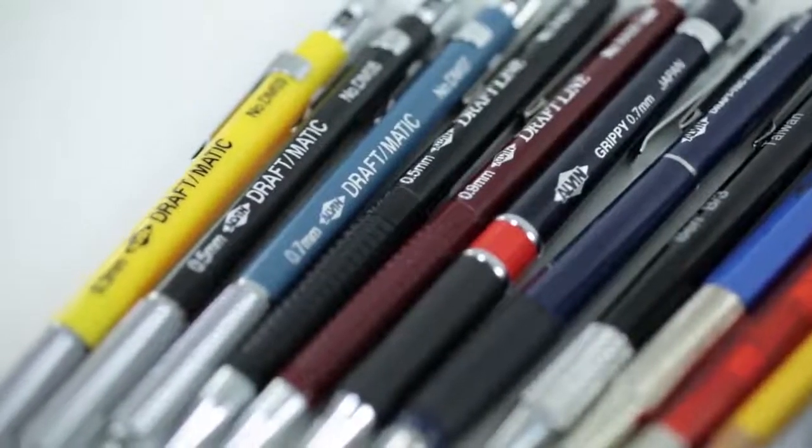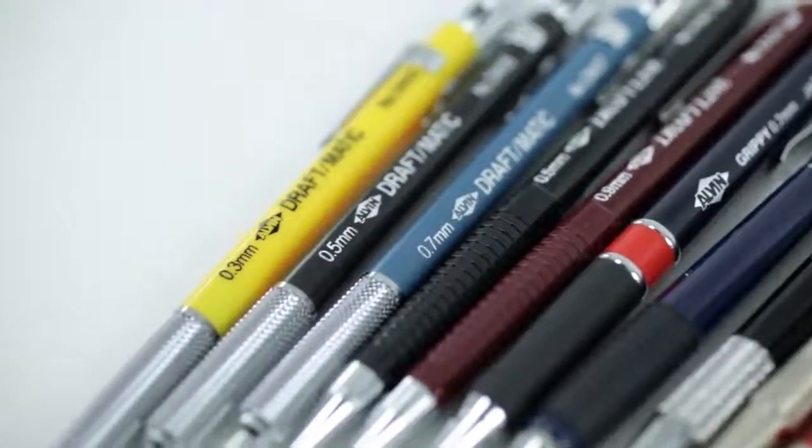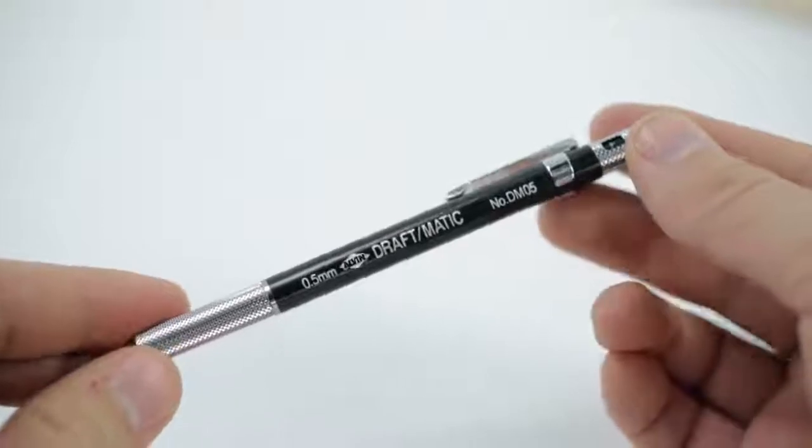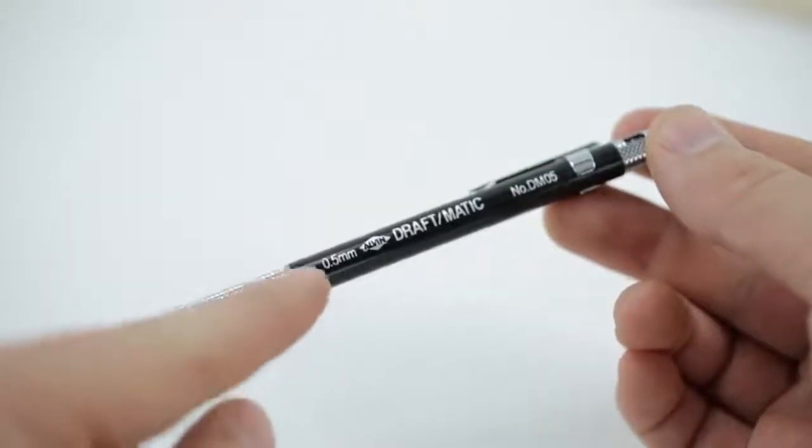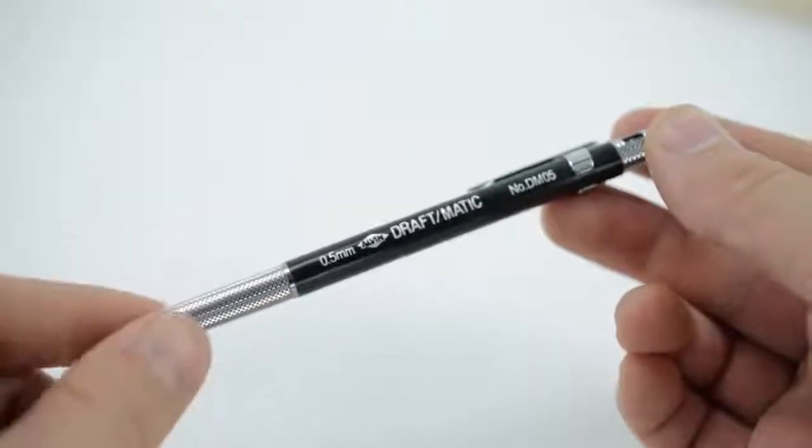Basically, the pencil will indicate the size lead it's designed for. For instance, this one takes a .5 mm lead, as shown on the side of the barrel.